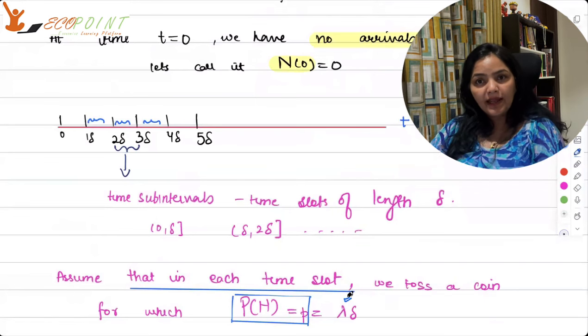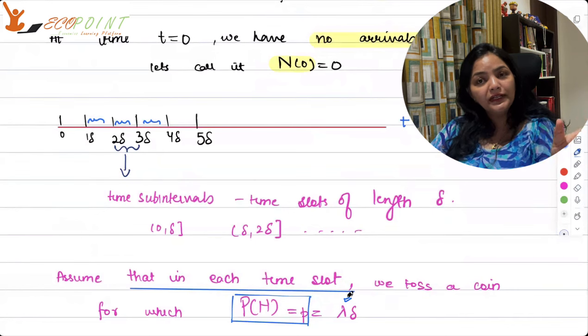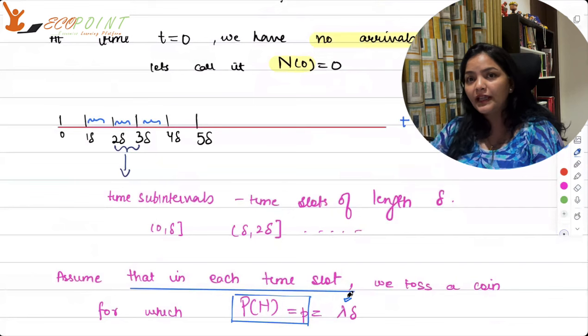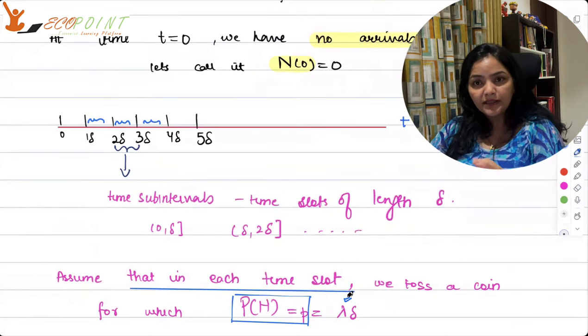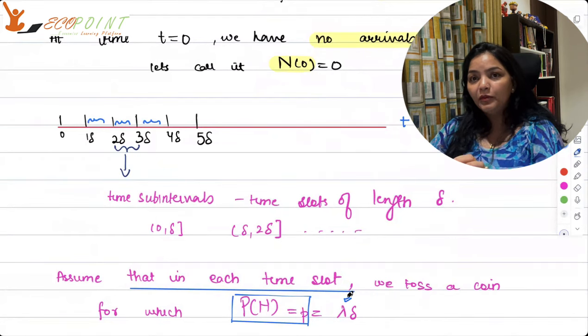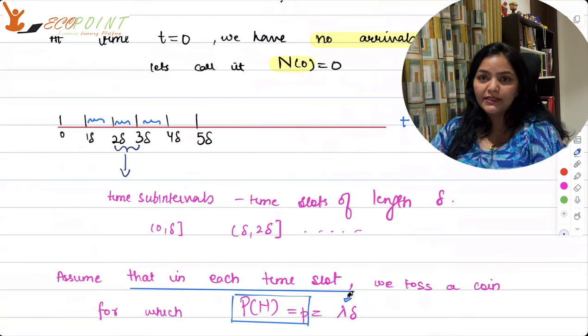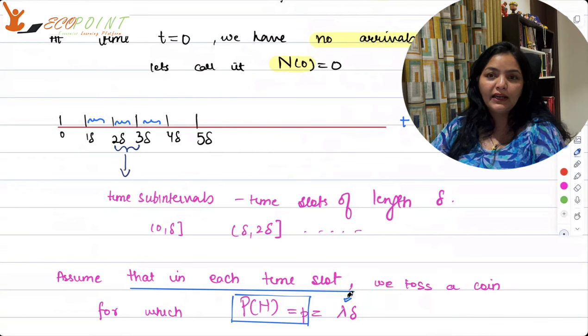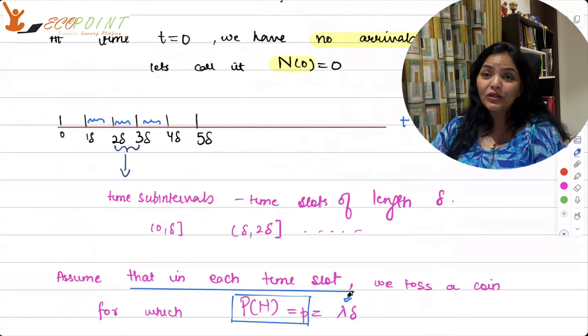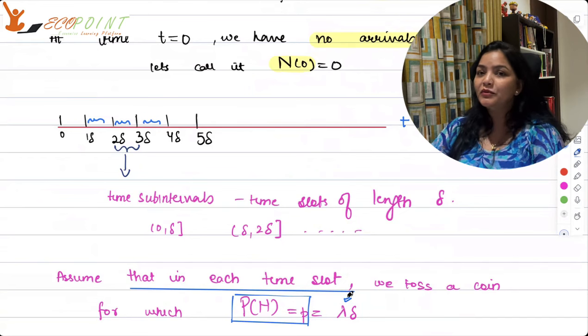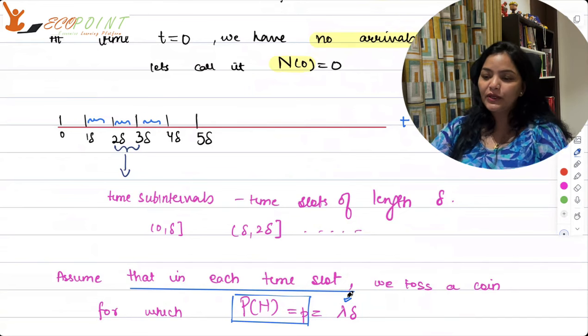But if I take it in a particular time period, in a time slot, in a delta length interval, then what is my rate? What is my probability? Probability is also in a sense the average rate. So here, the probability would become, this p would become lambda times delta. Try to understand, if you have a rate of 5 minutes, but the question is for 30 minutes, you will change it, right?